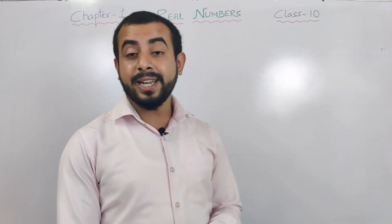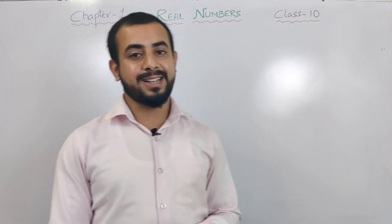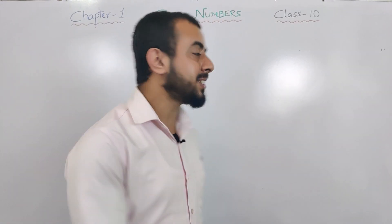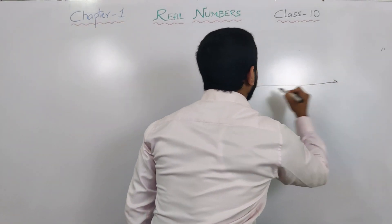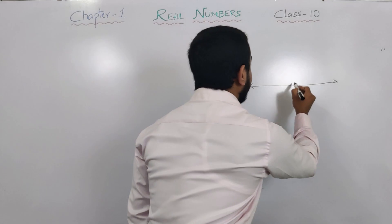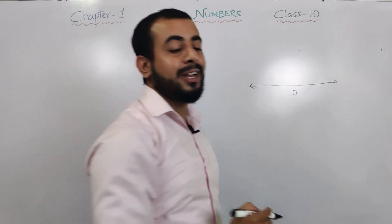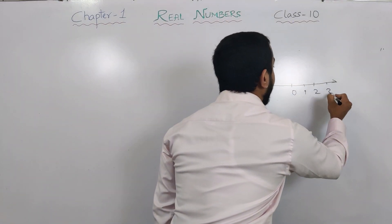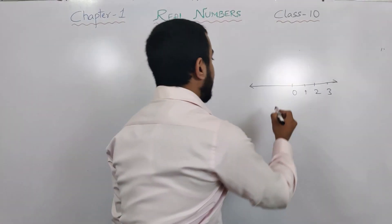Before starting real numbers, let us recall the number line we have learned in Class 9. So let us draw the number line first. I hope you remember how to draw a number line. In the middle, you write 0, and on the right side you write all the positive numbers, and on the left side you write all the negative numbers.